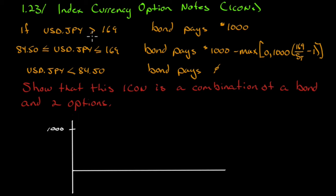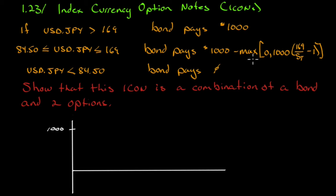Here's the payoff from this particular ICON. If the US/yen exchange rate is greater than 169, the bond pays $1,000. If it's between 84.5 and 169, the bond pays off proportionally. And if it's less than 84.5, the bond pays zero.